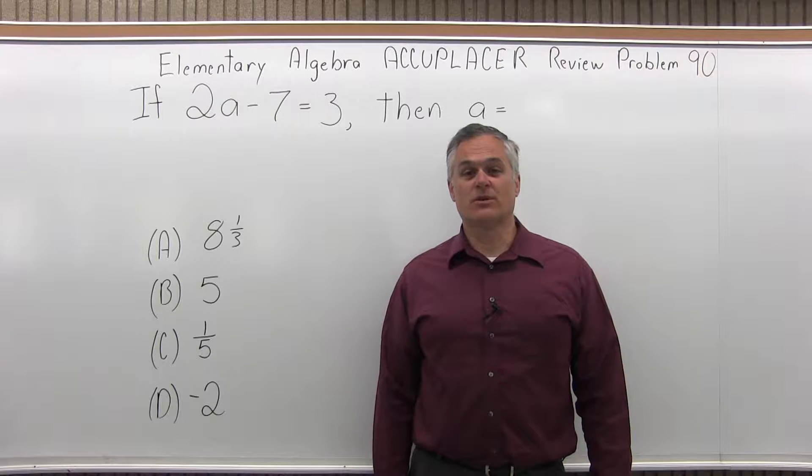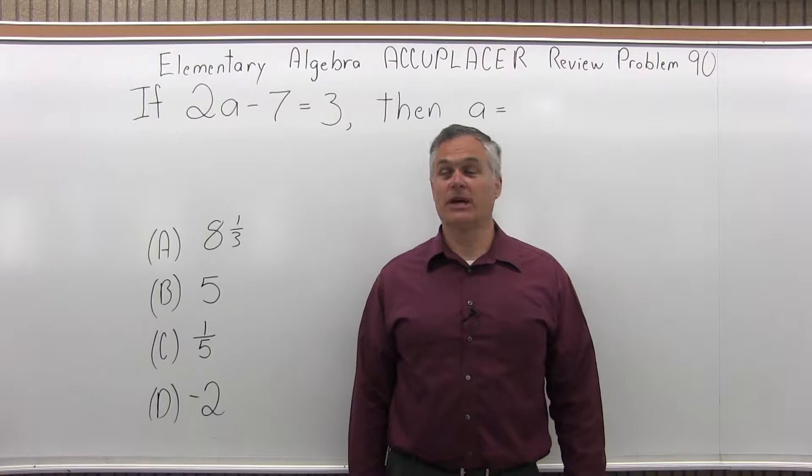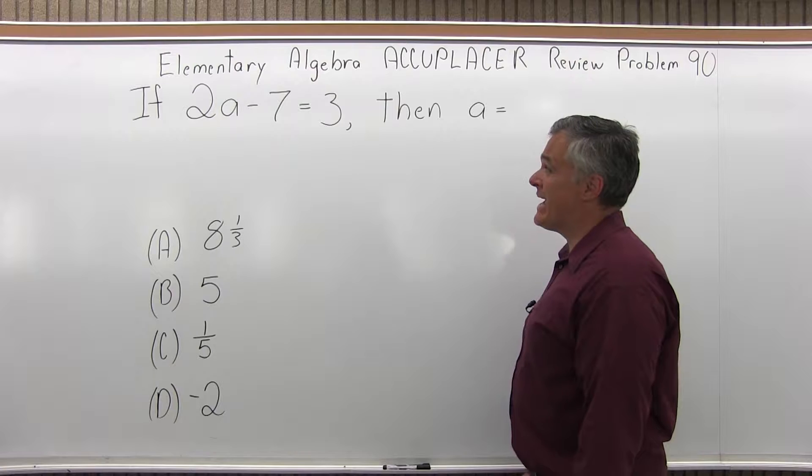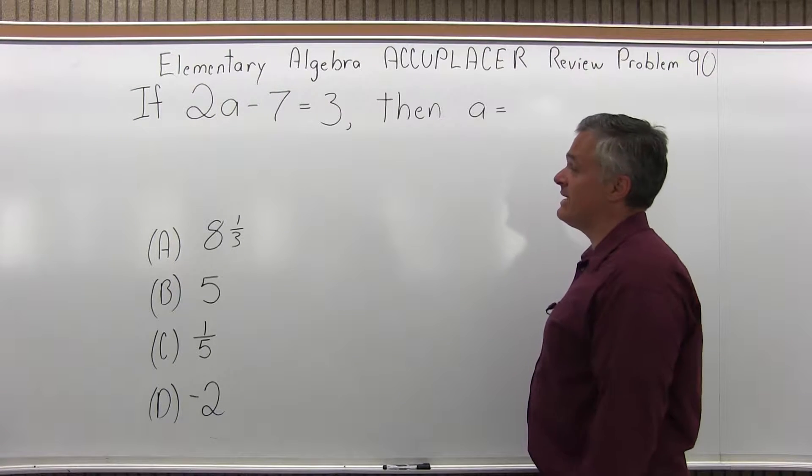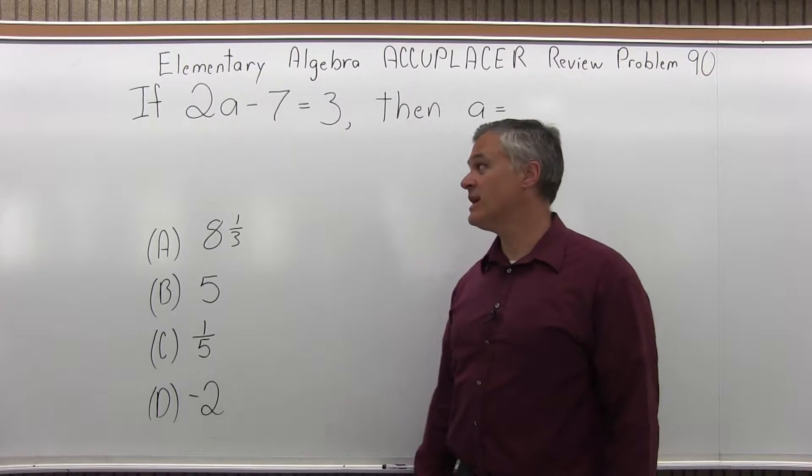This is the Elementary Algebra Accuplacer Review Problem 90. It says if 2A minus 7 equals 3, then A equals what? And which one of the four options fit?